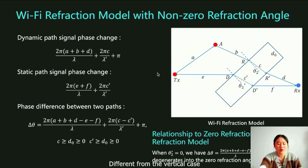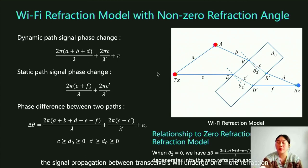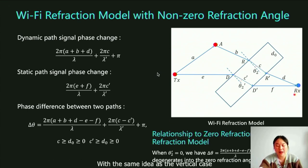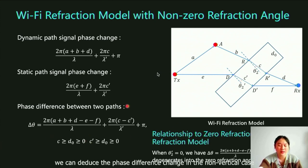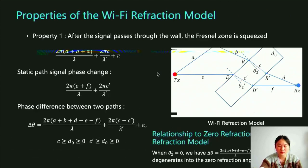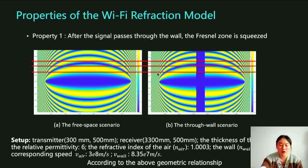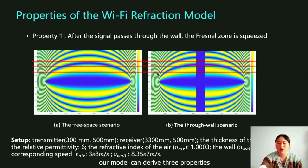Different from the vertical case, the signal propagation between transceivers will undergo one more reflection. With the same idea as the vertical case, we can deduce the phase difference change in the non-vertical case. According to the above geometric relationship, our model can derive three properties.